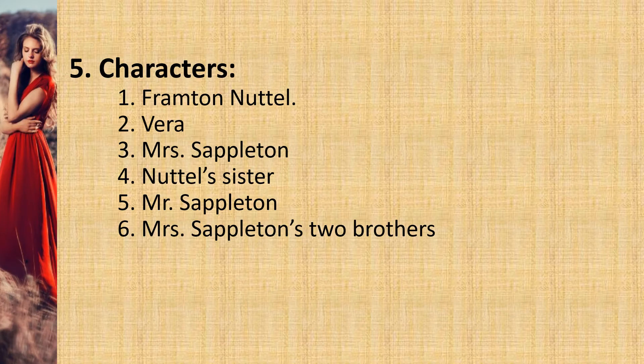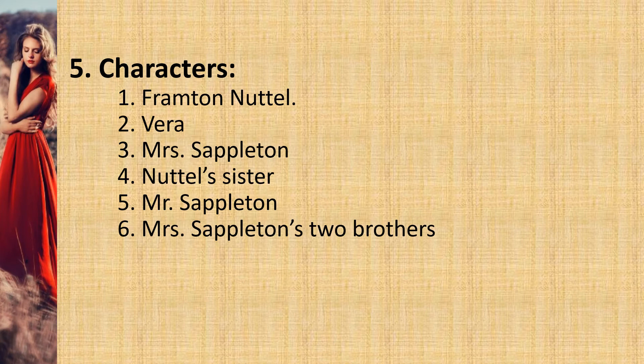Characters. Altogether, there are six characters in the story. Frampton Nattel is the protagonist of the story. His background, occupation, and age are unknown. He has recently moved to the unnamed rural area as per the recommendation of his doctors for his nerve cure. Vera is Mrs. Seppleton's niece and she is described as a self-possessed young lady of 15. Vera is a girl with a superb ability for fabricating stories, and some consider Vera as the antagonist of the story.